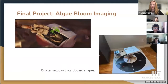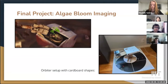Our final project is algae bloom imaging. The little red pieces in the orbiter setup picture are the pieces we're trying to detect with our CubeSat. During the mission, we spin the orbiter around the circle formed by the pictures manually around 10 times for the 10 orbits.